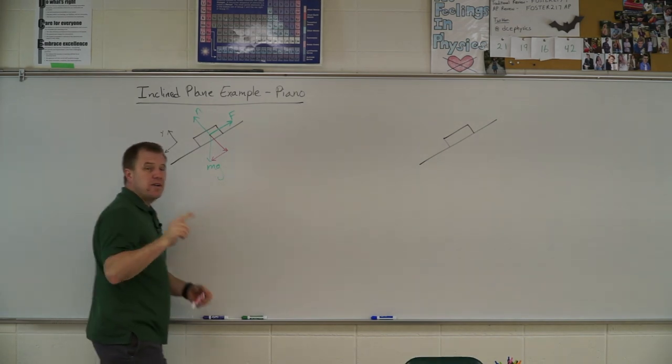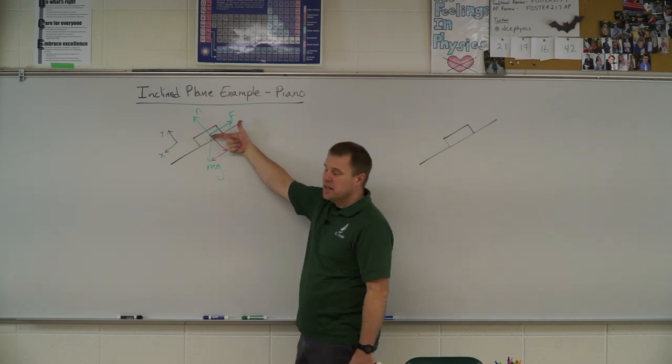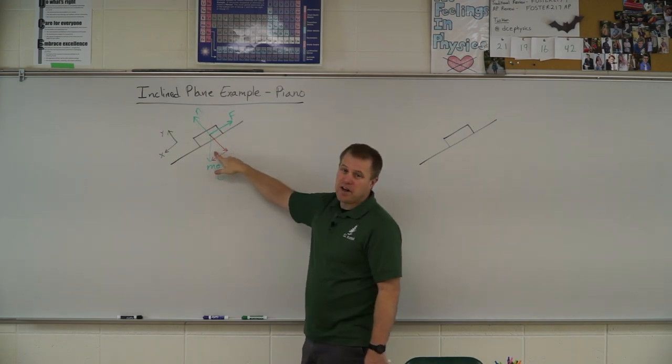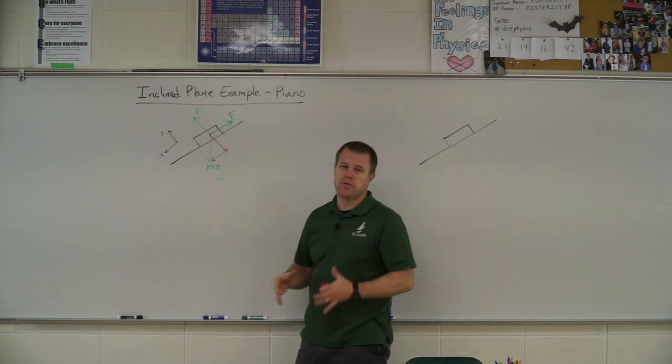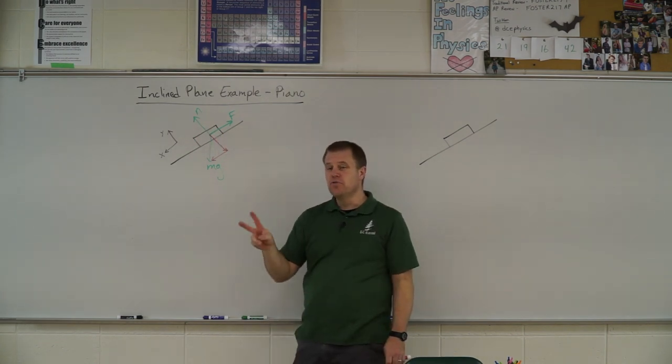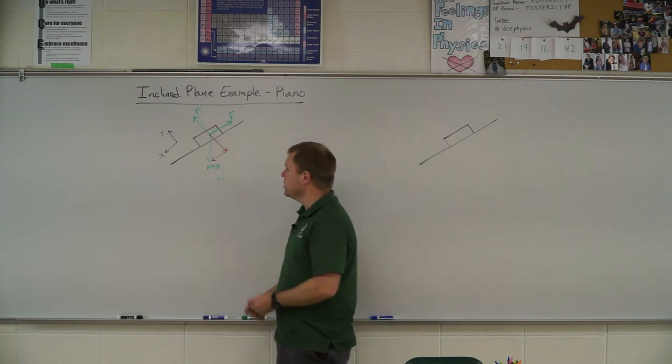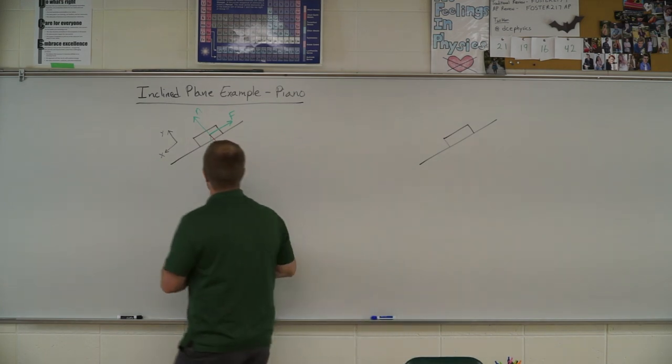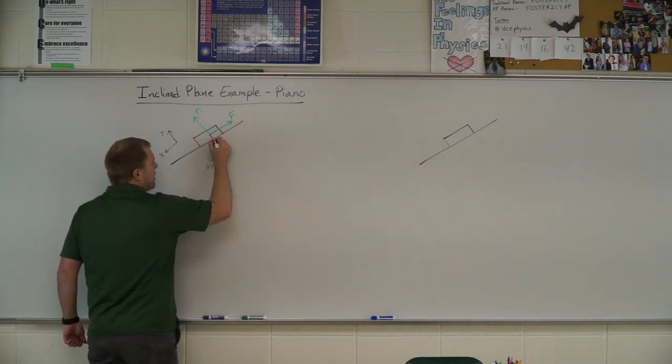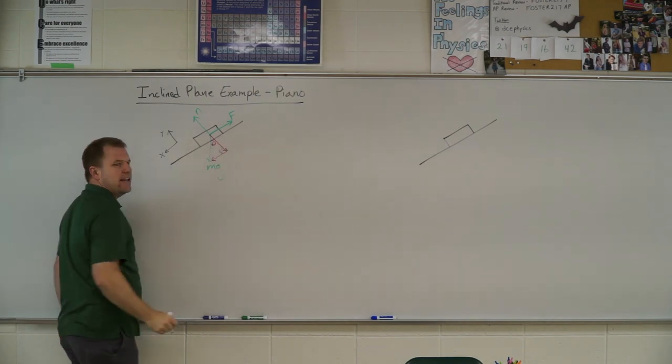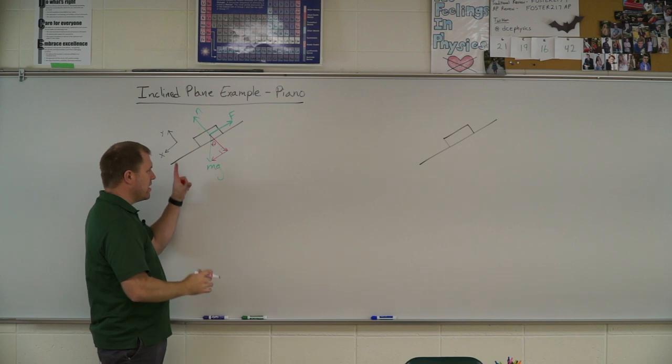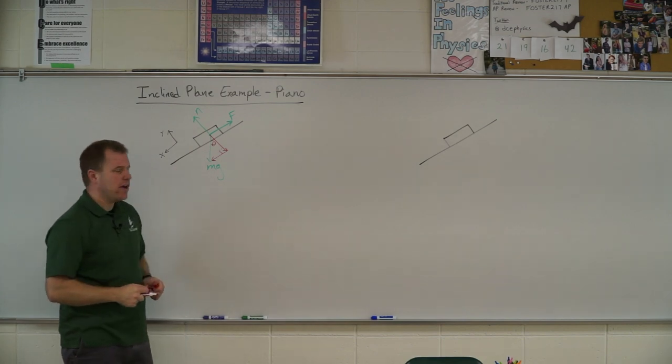Because if I would have left it how it was, I wouldn't have to resolve mg, but I would have to resolve normal force and the applied force. So I'd have to resolve two vectors. So we want to make our lives a little easier. So we're going to resolve mg into components. Make sure you're drawing this little triangle correctly. This is the 90 degree corner. So make sure that looks correct when you draw it.